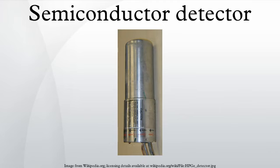The major drawback of germanium detectors is that they must be cooled to liquid nitrogen temperatures to produce spectroscopic data. At higher temperatures, the electrons can easily cross the band gap in the crystal and reach the conduction band, where they are free to respond to the electric field, producing too much electrical noise to be useful as a spectrometer. Cooling to liquid nitrogen temperature reduces thermal excitations of valence electrons so that only a gamma ray interaction can give an electron the energy necessary to cross the band gap and reach the conduction band.